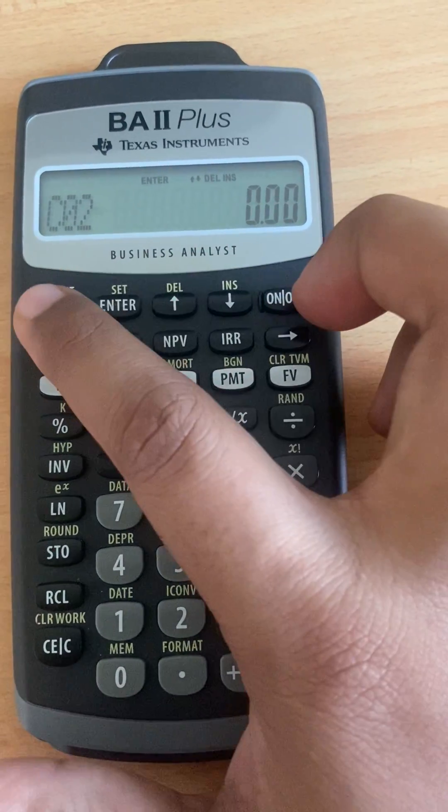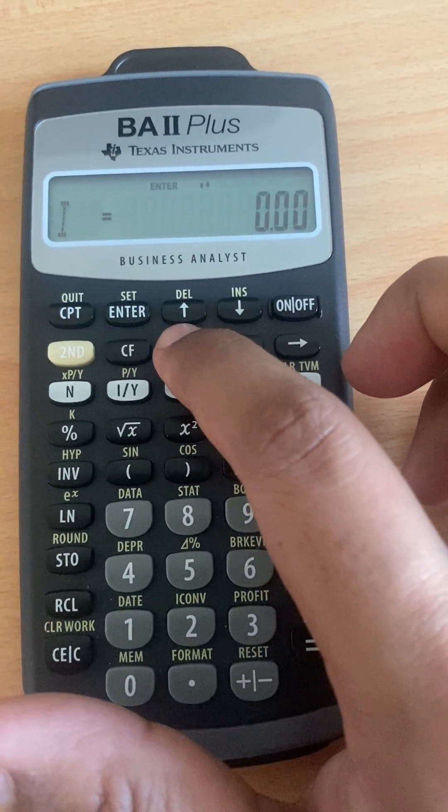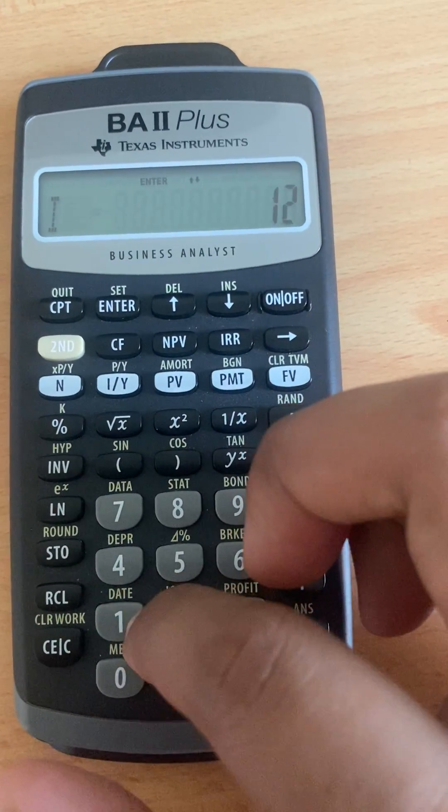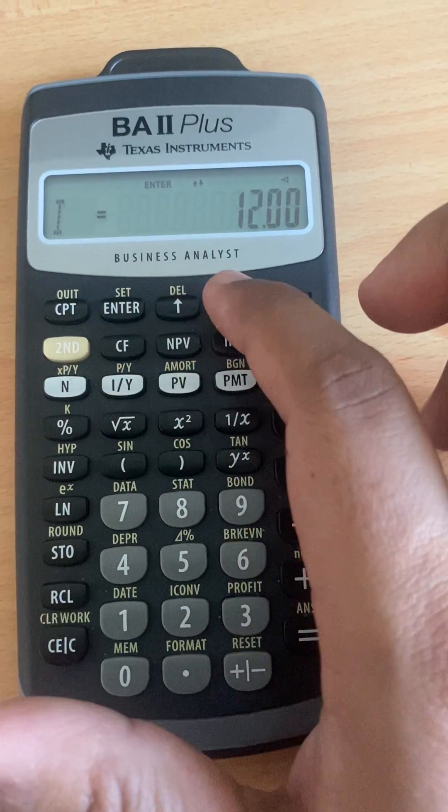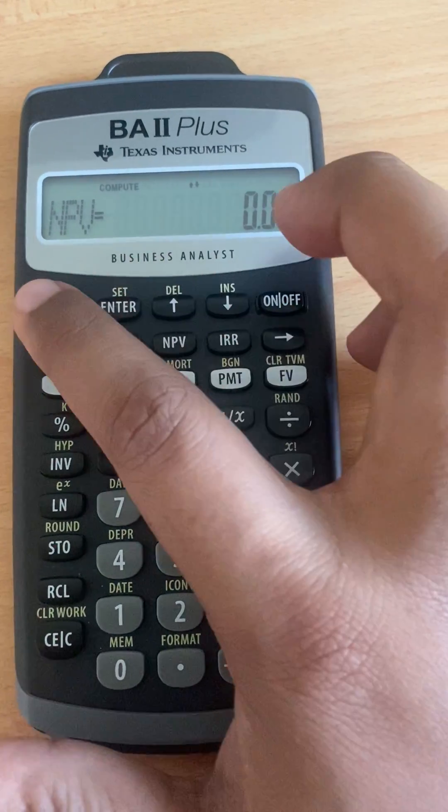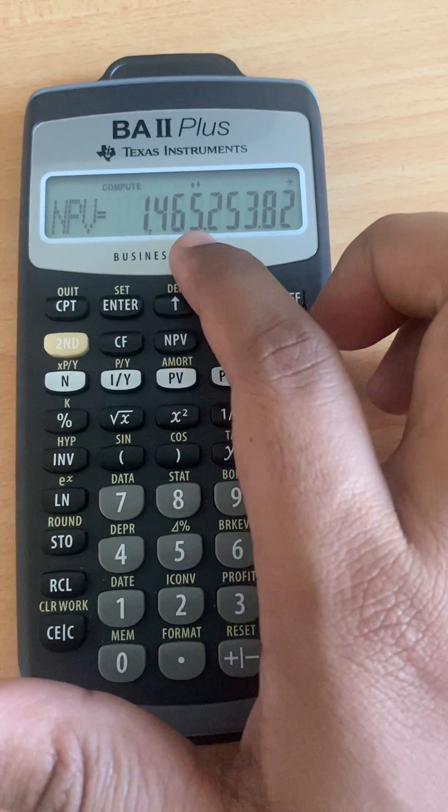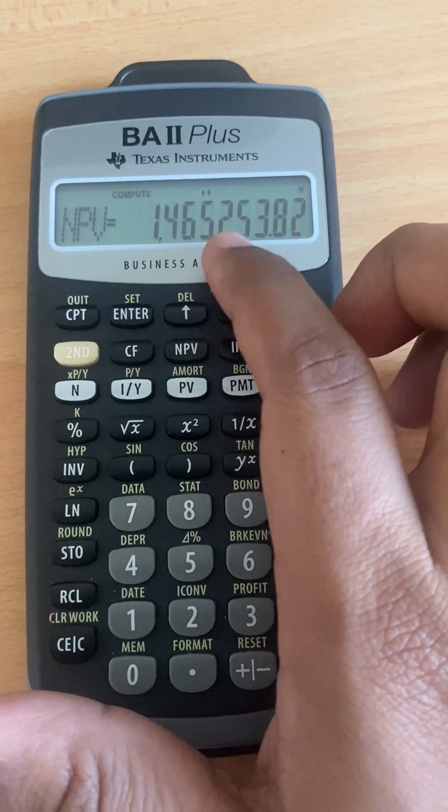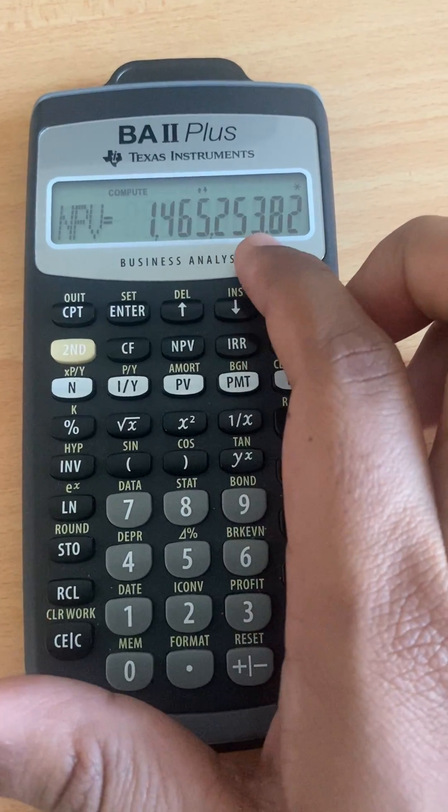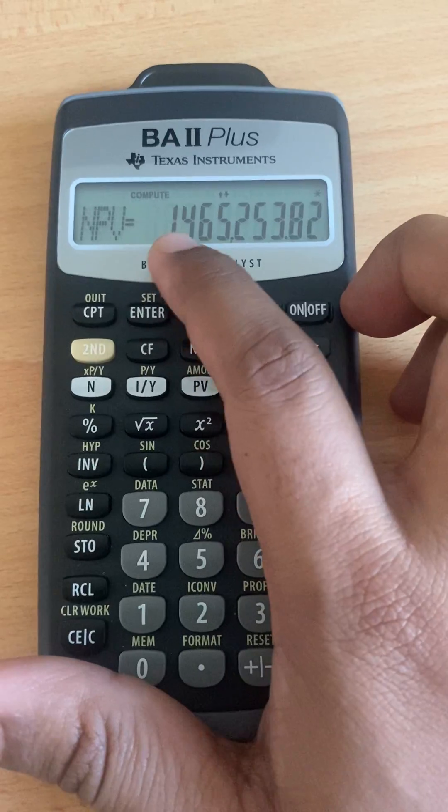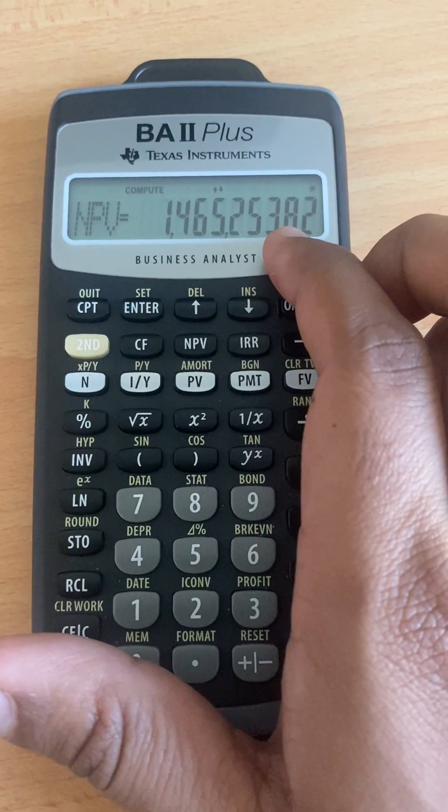And then you press NPV. The I remains the same, press enter, and then you press downward, you press compute. You will get 456,253.82. So you just take this one, alright?